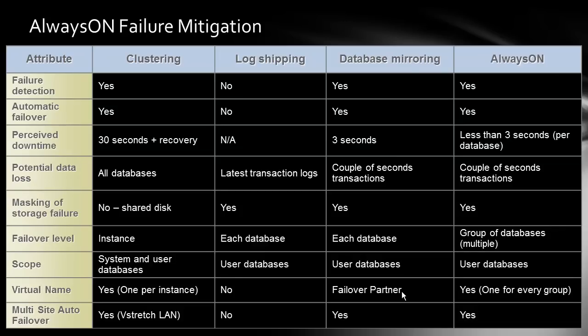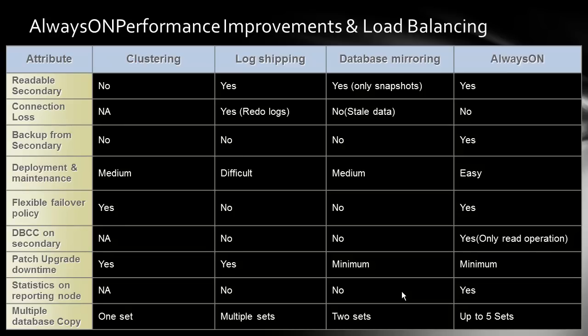For multi-site auto failover, stretched LAN provides that in clustering. Log shipping does not support it. Database mirroring can achieve it by configuring a witness. Always On does provide multi-site auto failover. For readable secondary, that is not possible in clustering, log shipping allows it, database mirroring allows you to take snapshots as a readable secondary, and in Always On it is available without any constraints or restrictions.